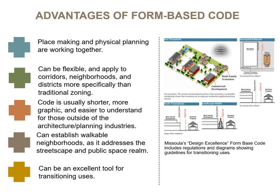Advantages of form-based code include: place-making and physical planning working together; it can be flexible and applied to corridors, neighborhoods, and districts more specifically than traditional zoning; the code is usually shorter, more graphic, and easier to understand for those outside of the architecture and planning industries; form-based code can establish walkable neighborhoods as it addresses the streetscape and public space realm; and it can be an excellent tool for transitioning uses — for example, obsolete manufacturing such as lumber mills or industrial areas, and rail corridors through cities and towns where older adjoining structures need to be repurposed or relocated.